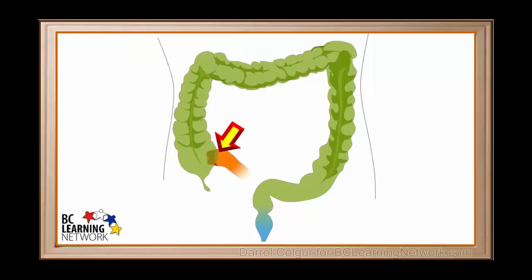Here is where the small intestine joins onto the large intestine. There is a valve right here that can open to let chyme pass from the small intestine into the large intestine.